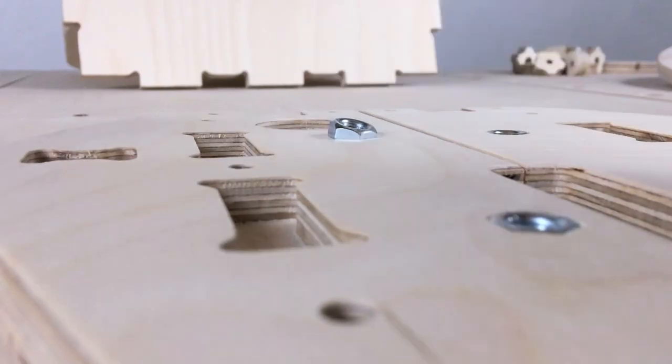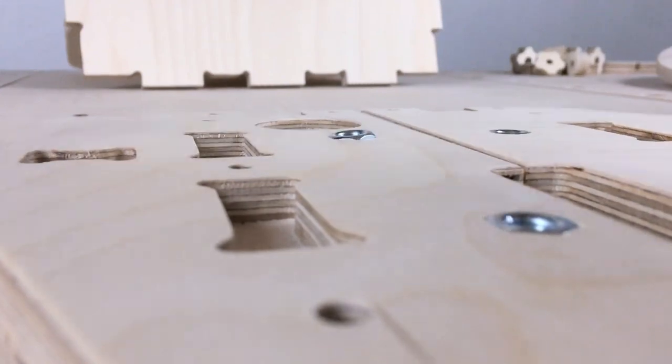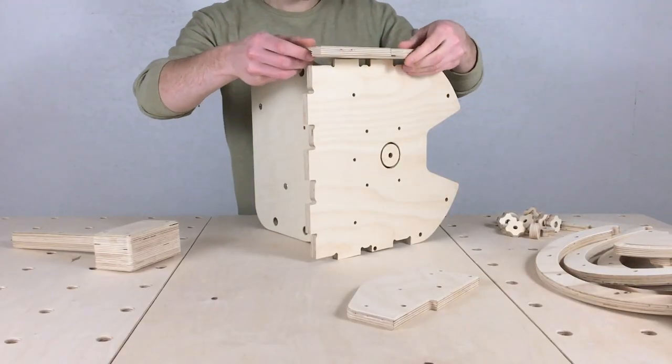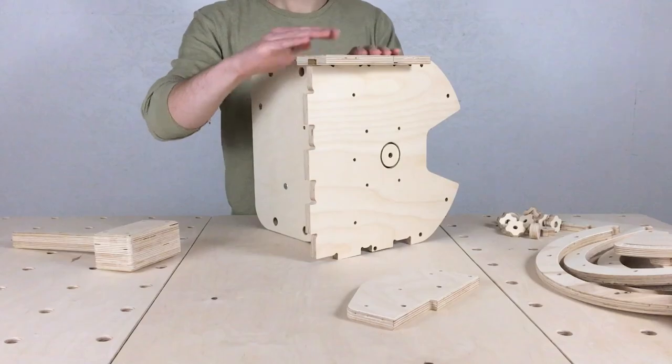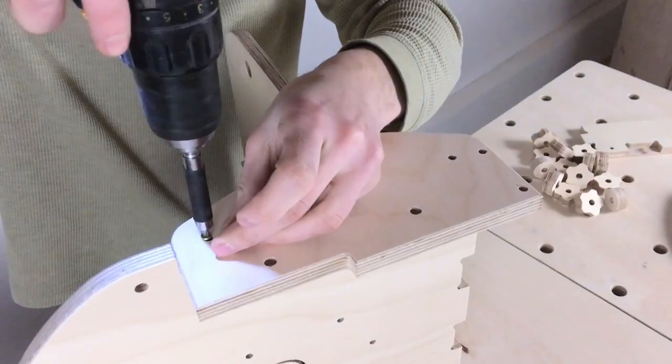After installing the back wall I inlaid hex nuts in the side components. These will be necessary when attaching the work surface. When that was done I attached the side parts on the frame we had already built.